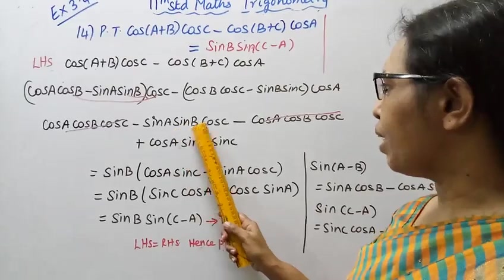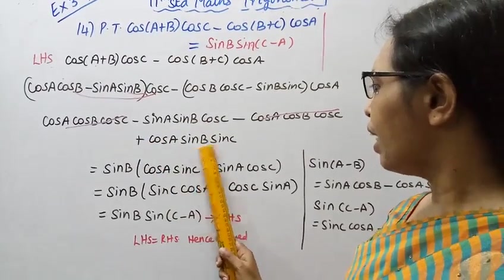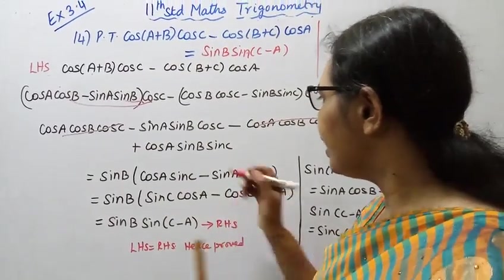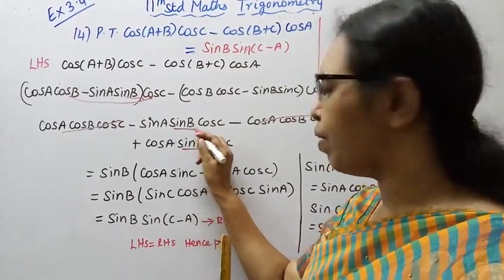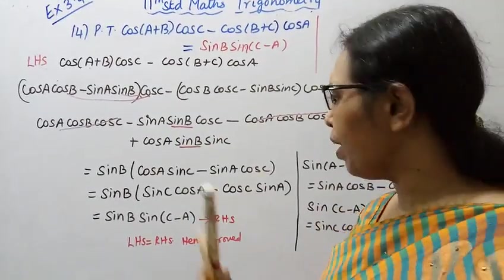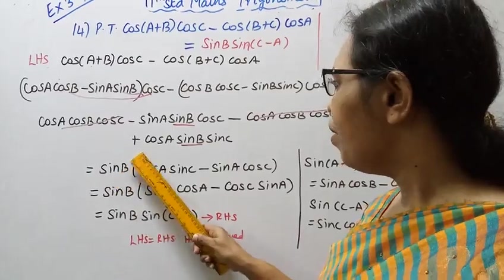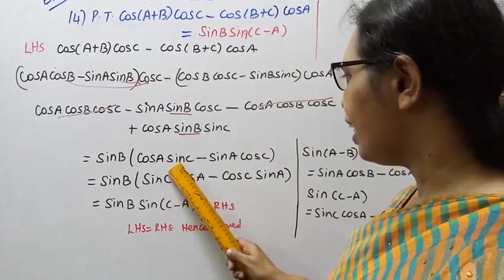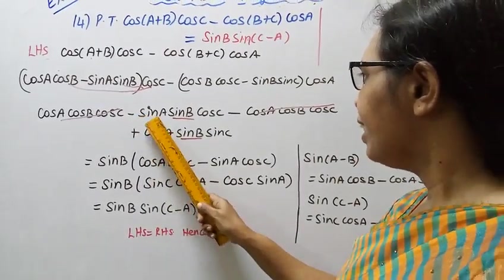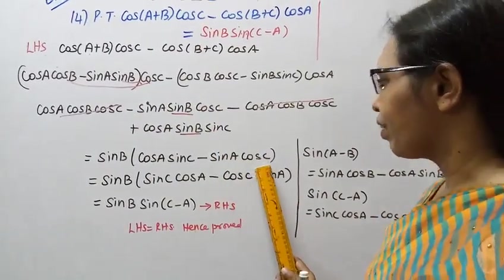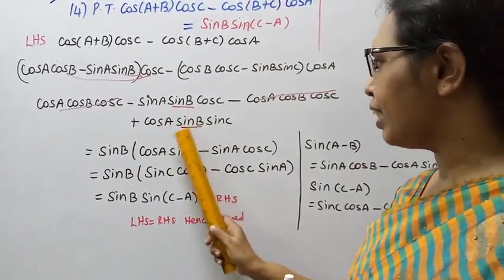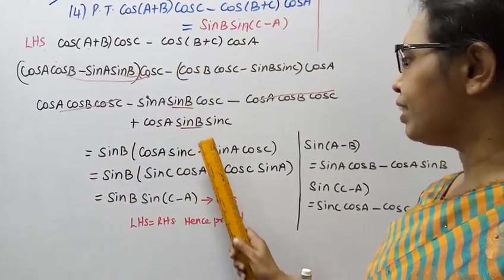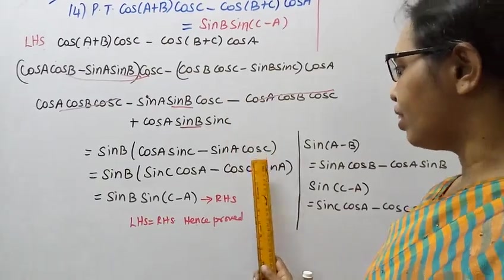So minus sin A sin B cos C plus cos A sin B sin C. Take common sin B. Sin B, cos A sin C minus sin A cos C.